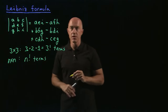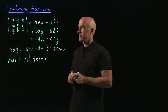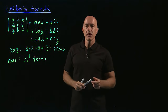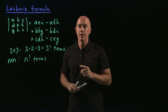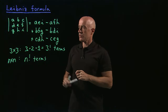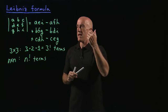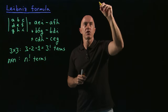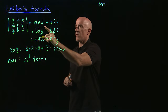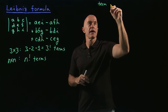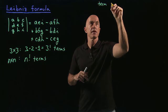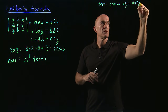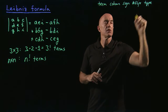So that's the idea of computing the determinant from the Leibniz formula. The complication is how do you determine which terms have a plus sign and which terms have a minus sign. Let's make a table to figure out why some terms are positive and some are negative. The columns of the table will be: term, column order, sign, number of flips, and sign of the term.